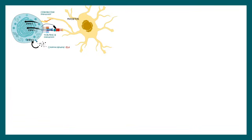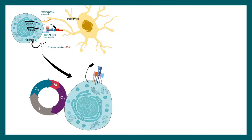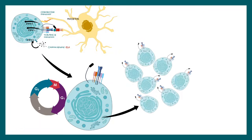Once there are three signals like this, the T cell will now re-enter the cell cycle. They would proliferate rapidly — this is known as clonal expansion.